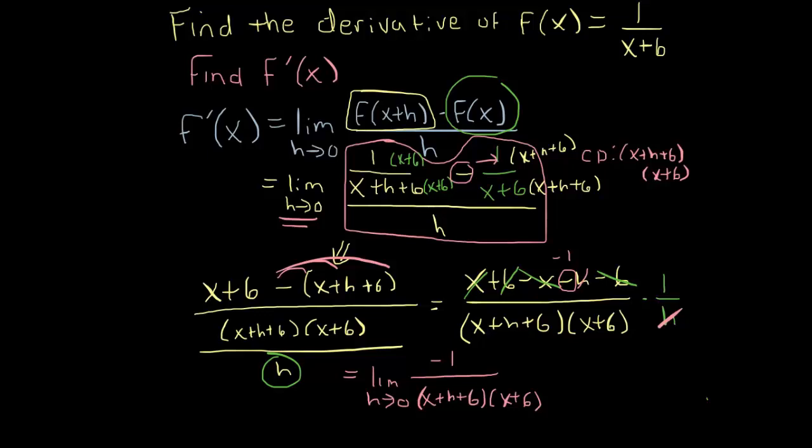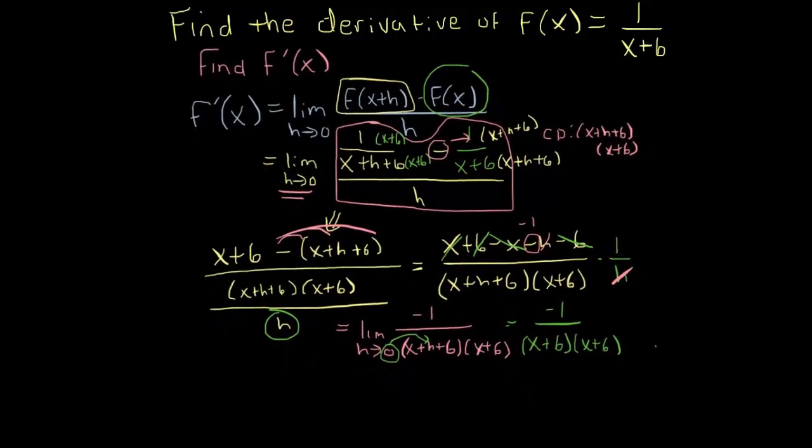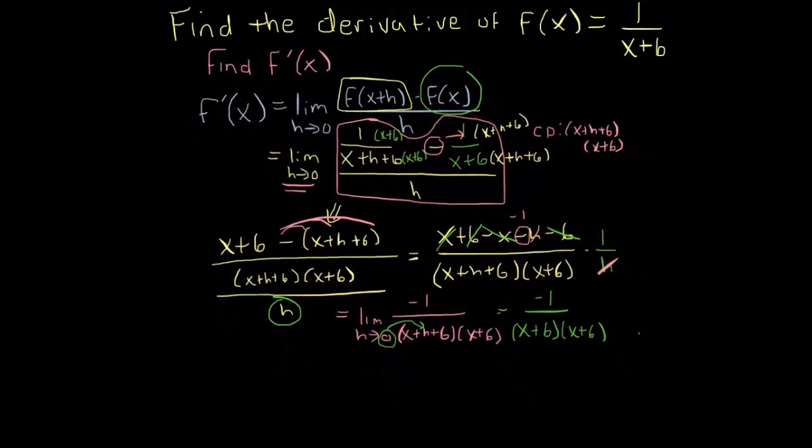And now, since that h has been canceled, I can plug in 0 for whatever h's are left, which is just that one. So this is negative 1 over (x+0+6), which is just x+6, times x+6. Although we more often will write it simply as -1/(x+6)².